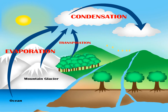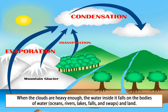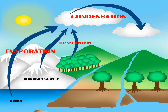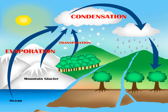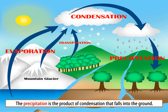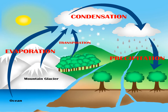Process 3: The water is falling. When the clouds are heavy enough, the water inside falls on bodies of water such as oceans, rivers, lakes, falls, and swamps, and on land, in the form of rain and snow. This is what we call precipitation. Precipitation is the product of condensation that falls to the ground. Other types of precipitation include freezing rain, sleet, and hail.